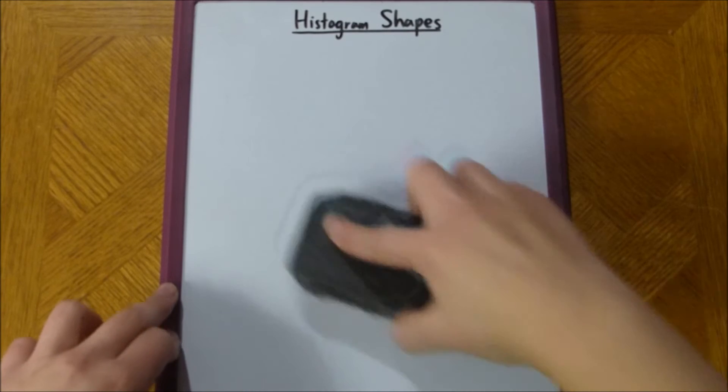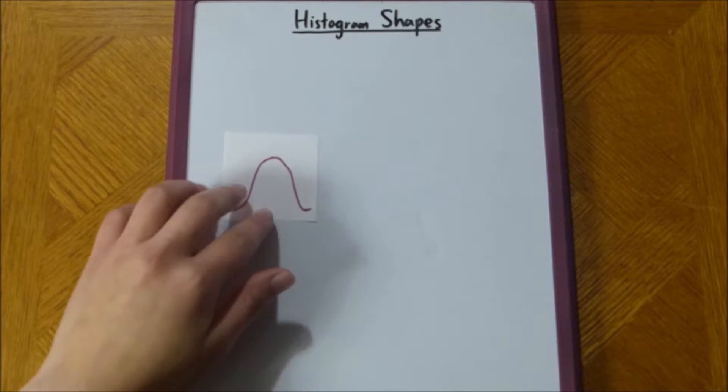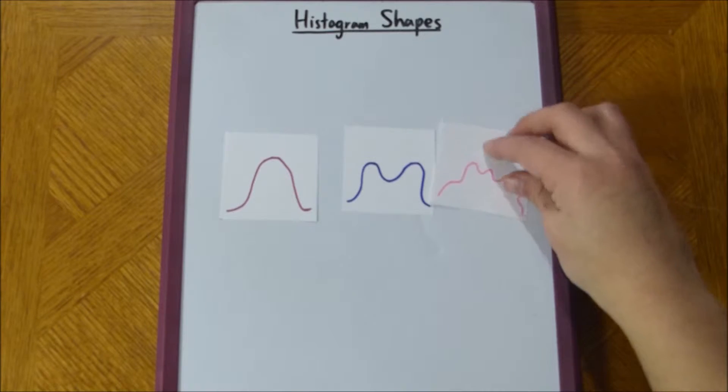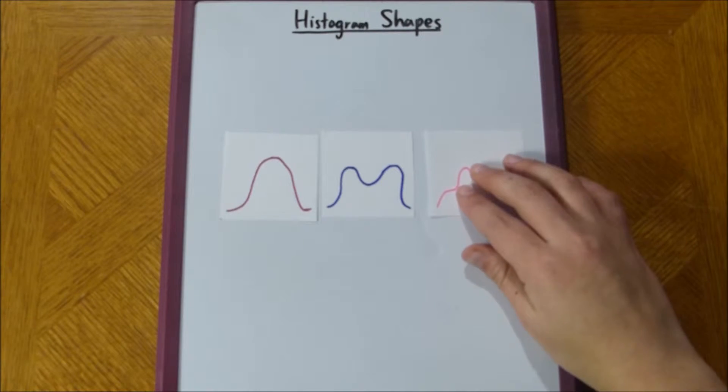And what we're going to be talking about is the shapes of these smooth histograms. So, one way that we can characterize the shapes is in the number of peaks or modes. I have three examples of histograms. There's that one, there's this one, and there's this one, right?